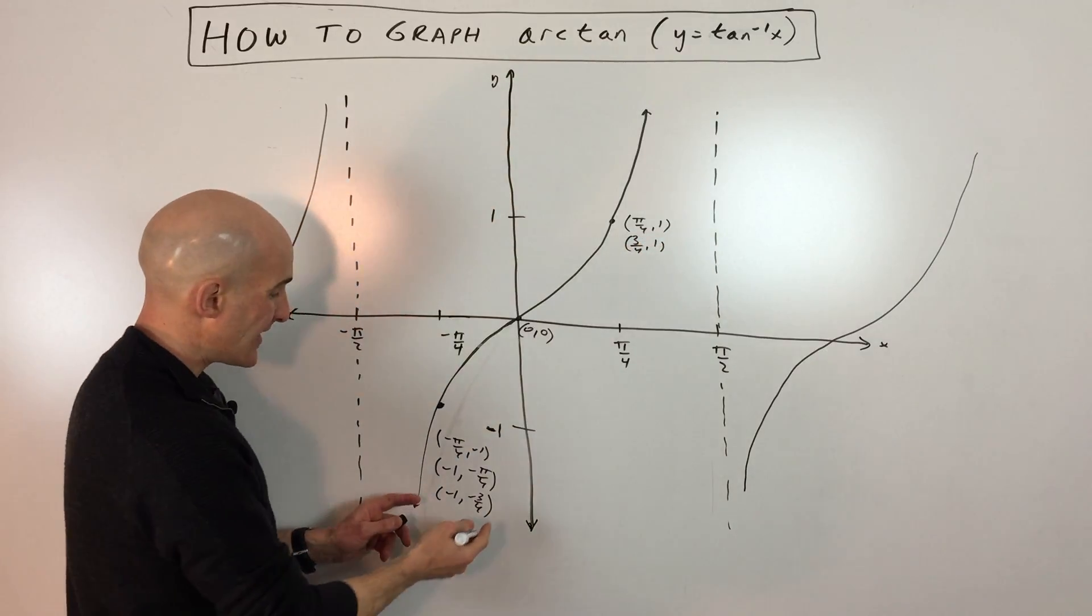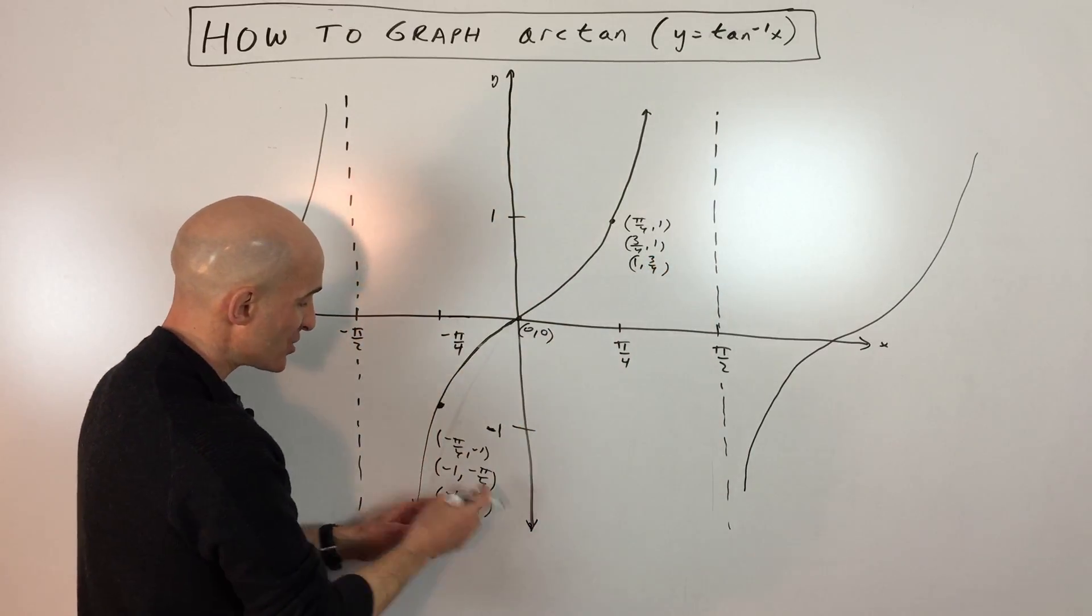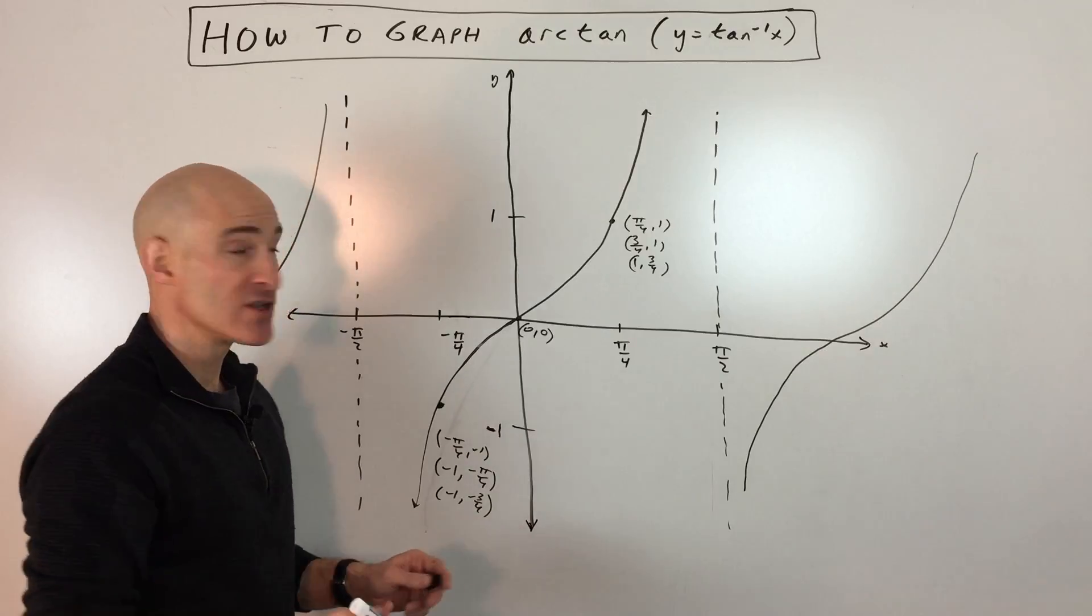So what we're going to do is we're going to interchange these values. So 1 comma 3 fourths, 0, 0 is already switched, and negative 1, negative 3 fourths. So let's go ahead and plot those.